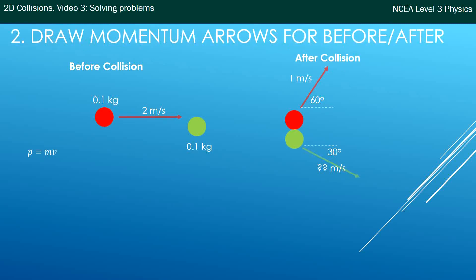The next was to add my momentum arrows. So I've just got down there in the left-hand side: P momentum equals mass times velocity. So momentum for the red one before the collision is 0.2 momentums because it's 0.1 times 2 meters a second, and afterwards I've got 0.1 momentums going up here and an unknown amount of momentums going down there.